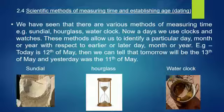Thus it was very difficult in that period to find out exactly what time it was — whether it was morning, afternoon, evening, or night. I have shown a picture here which will help you understand how the time period was understood by people in those early periods. These methods allow us to identify a particular date, day, month, or year with respect to an earlier or later day, month, or year. For example, today is the 12th of May, so we can tell that tomorrow will be the 13th of May and yesterday was the 11th of May.